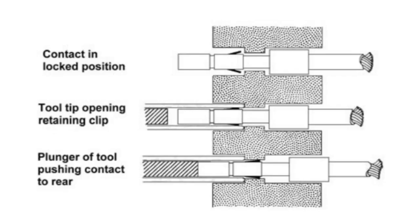On a contact lock, the locking device is located on the contact itself in the form of a spring finger, which snaps into place on a ring inside the insert. The contacts are usually inserted from the rear of the connector and removed from the front of the connector.